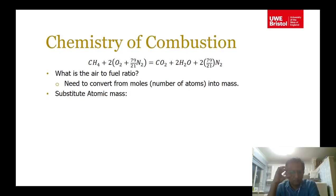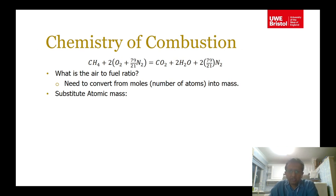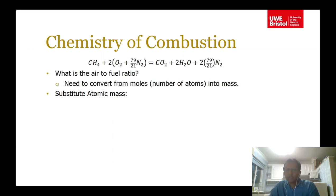We will continue with the methane example. The equation for combustion of methane in oxygen can be written as CH4 plus 2 O2 plus 79/21 N2. The 79/21 factor comes from the mole fraction of nitrogen in air. That nitrogen doesn't burn, so 2 times 79/21 N2 will remain in the products, and the rest of the products are CO2 plus 2 H2O.